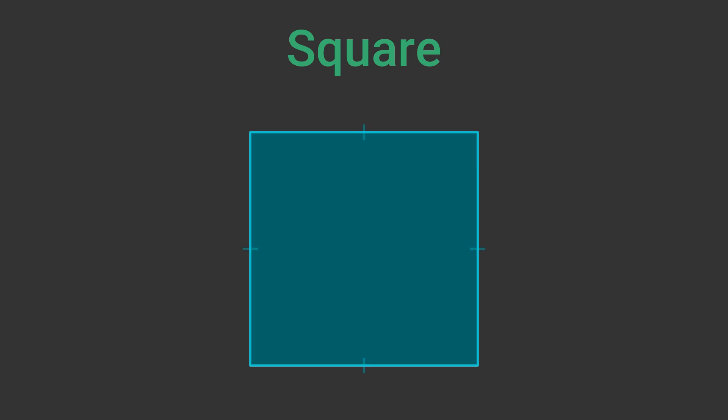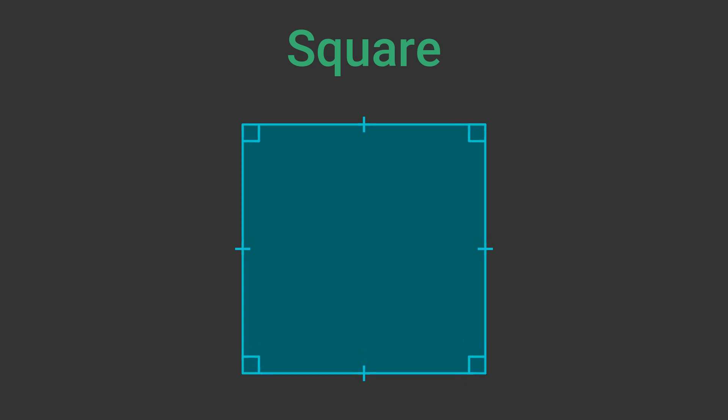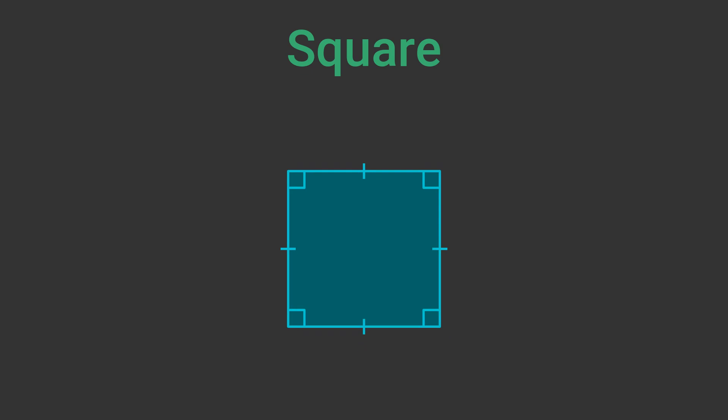A square is a quadrilateral with four equal sides, and where each angle is 90 degrees. A square is a regular quadrilateral. All squares are the same shape, although they can be different sizes.